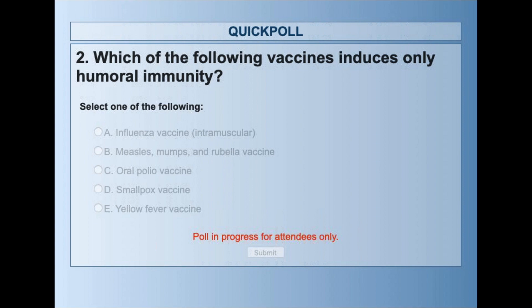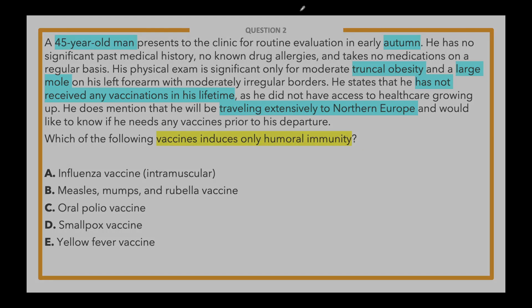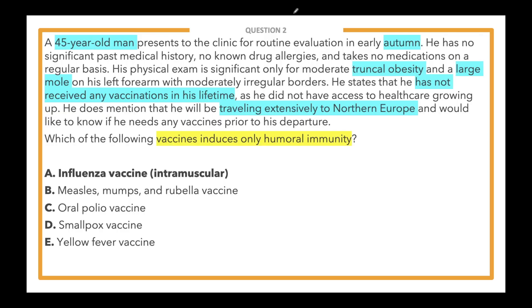Results: half of you selected A — influenza vaccine intramuscular — and in second place with 23% was C — oral polio vaccine. The correct answer is indeed A, influenza vaccine intramuscular. Last time we covered this question only about 30% got it right, so we're making progress.